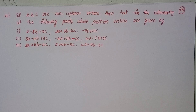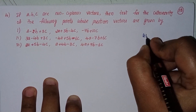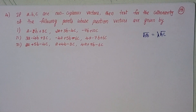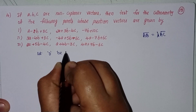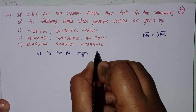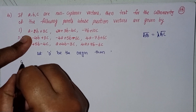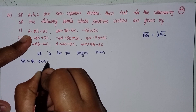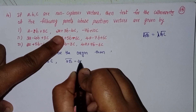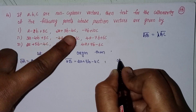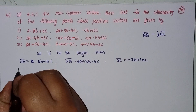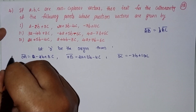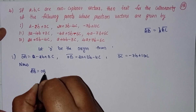We test collinearity by checking if AB equals lambda times AC, and we will find the lambda value to determine whether the points are collinear. Let O be the origin. Then OA equals a minus 2b plus 3c, OB equals 2a plus 3b minus 4c, OC equals minus 7b plus 10c. Now find AB equal to OB minus OA.